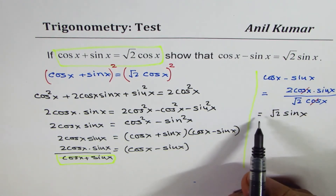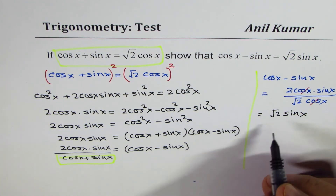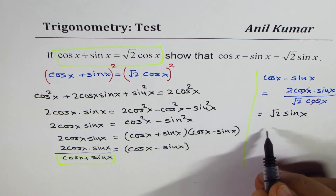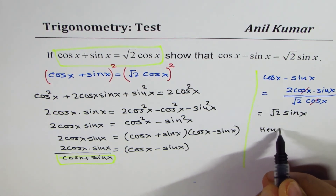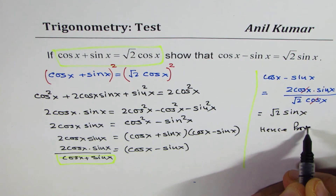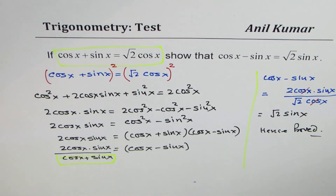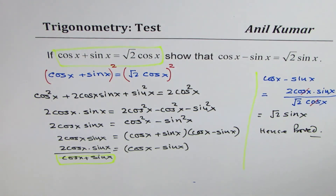We got cos x minus sin x equal to square root 2 sin x — hence proved. I hope that works for you. Feel free to write your comments, share your views. Thank you and all the best.